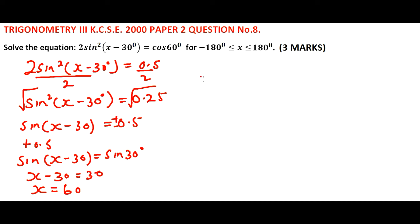Also, the sine of 150 is the same as 0.5. So we say x minus 30 degrees is equal to 150, since the sine of 150 is 0.5. This means x is equal to 180 degrees.